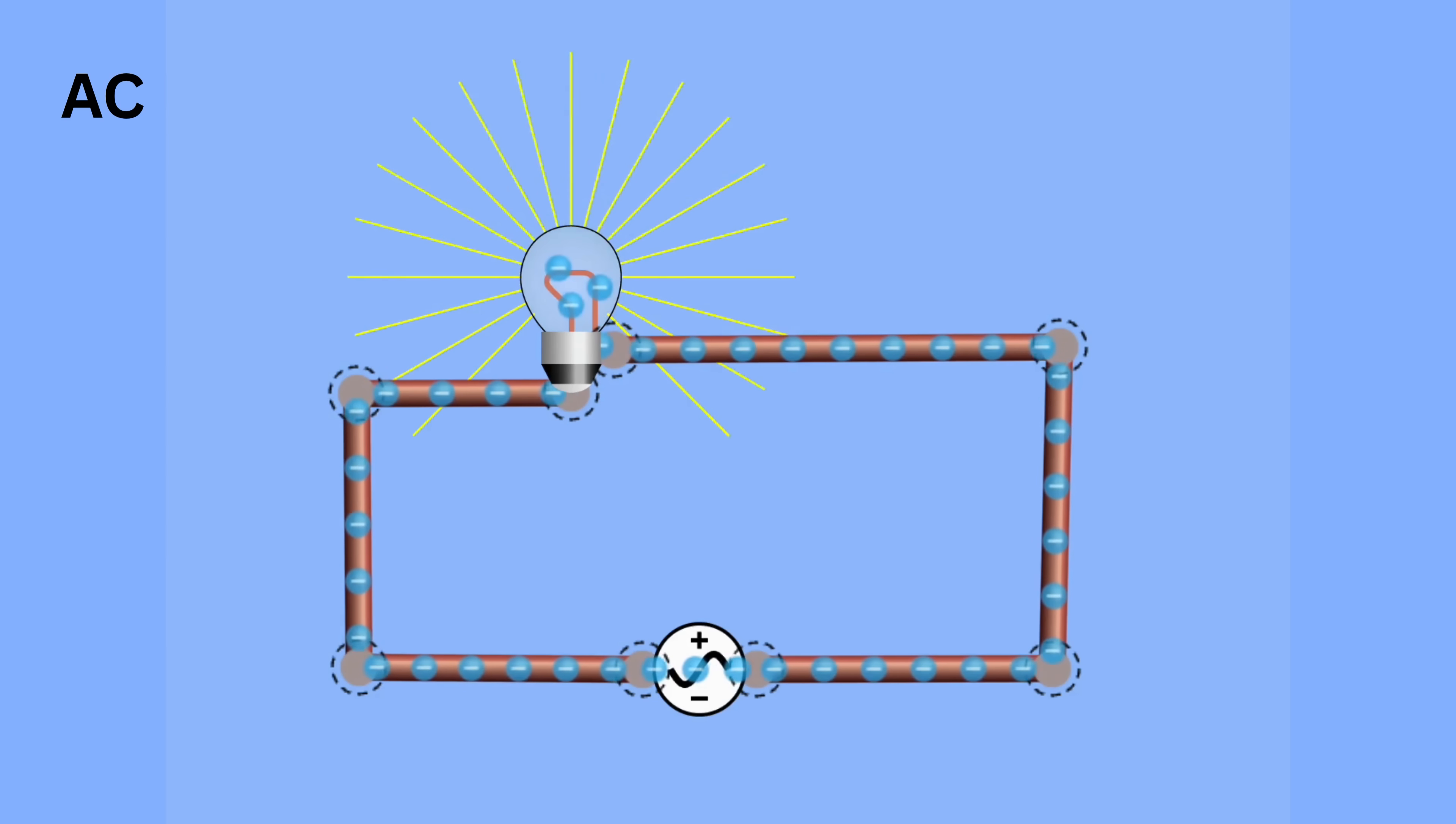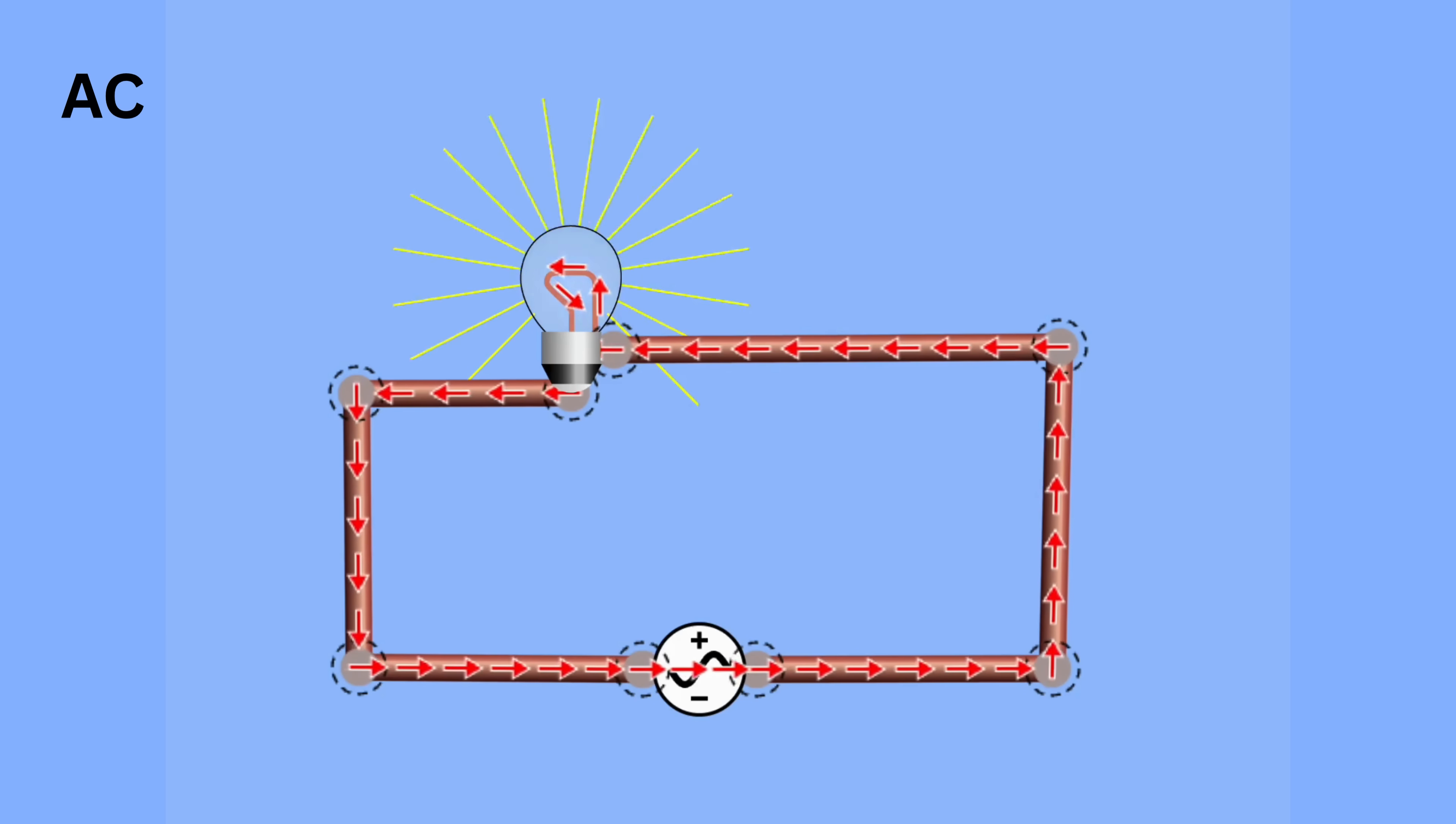That means electrons move one way for a short time, then reverse direction and flow the other way, and this keeps repeating.